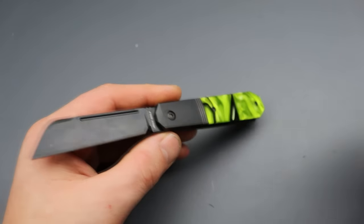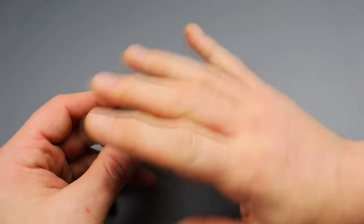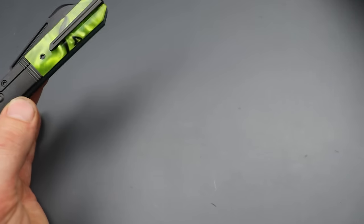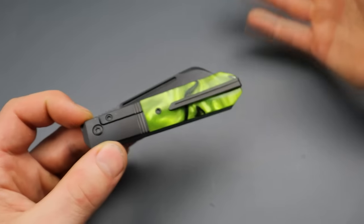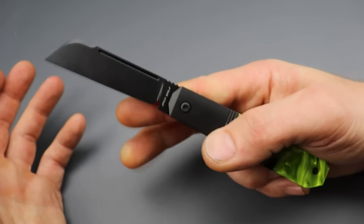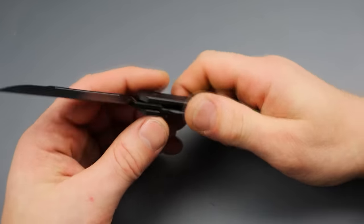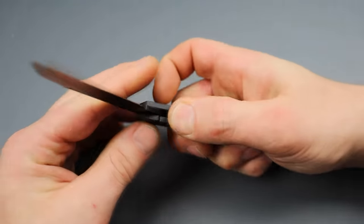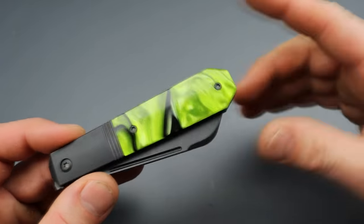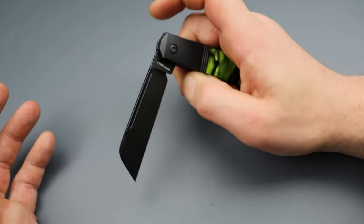The ones that were failing were like certain locking systems and those ones I would always test, but I didn't test everything. It seems like a lot of frame locks and liner locks recently have been failing from all different companies of all different price ranges, even the best companies. So we're going to start spine whacking every single knife from now on because I feel responsible. If I was doing it more often, I would have caught some and would have made the company do their own testing before they came to you guys.